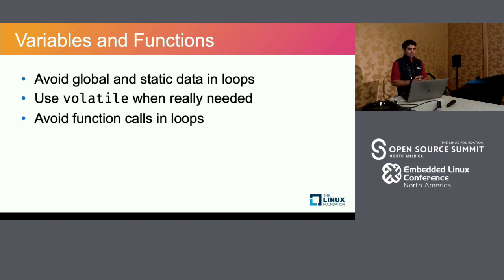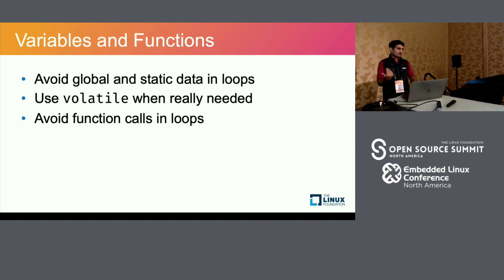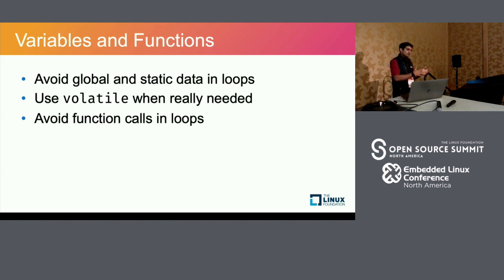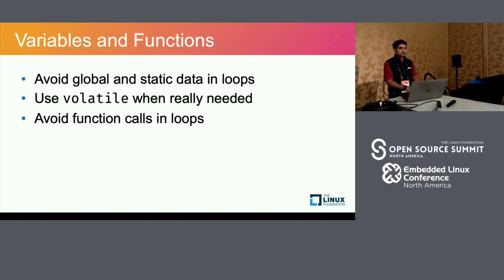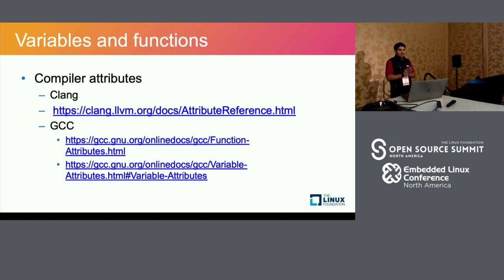If you have function calls in loops, check whether those functions are inlined. If they are inlined, that's fine. If not, you're incurring a function call overhead inside a loop, which evicts the cache and eliminates the cache usage benefits. Make sure loops contain small functions that can be inlined, or avoid non-inlined function calls inside loops entirely.